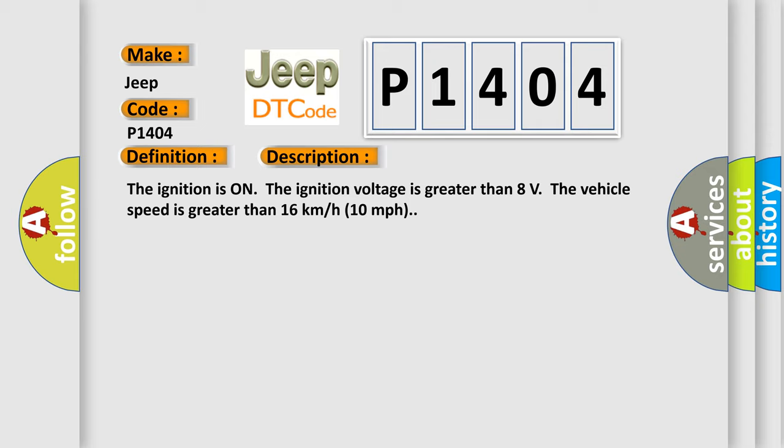The ignition is on, the ignition voltage is greater than 8 volts. The vehicle speed is greater than 16 kilometers per hour, 10 miles per hour.